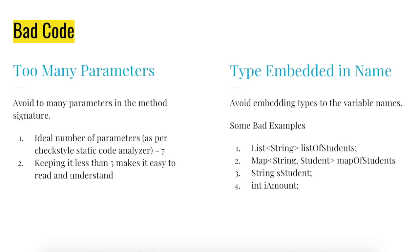Too many parameters — avoid too many parameters in the method signature. The ideal number of parameters, as per the Checkstyle static code analyzer, is seven. In my case, keeping it less than five makes it easy to understand and read.